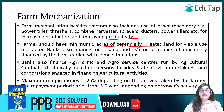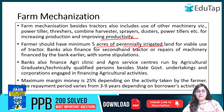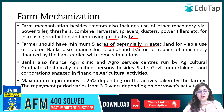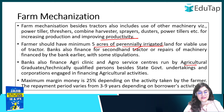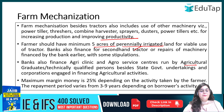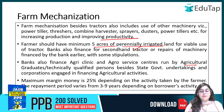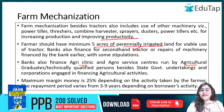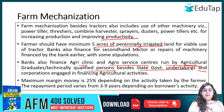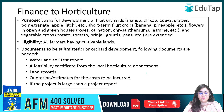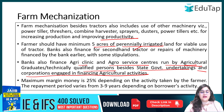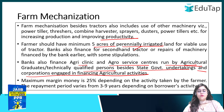Even if you want to take a second-hand tractor or repair your machinery, the bank will give you loans based on its terms and conditions. Banks also finance agri-clinics and agro-service centers run by agricultural graduates, technically qualified persons, besides state government undertakings and corporations engaged in financing agricultural activities. The maximum margin kept here is 25%, and the repayment period for these items is 3 to 9 years.